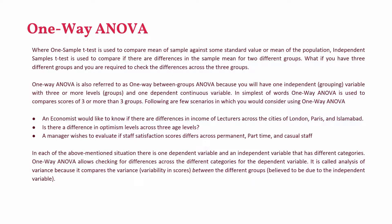For example, an economist would like to know if there are differences in income — this is your dependent variable. The income of lecturers is compared across three cities, so cities is your grouping variable with three categories.